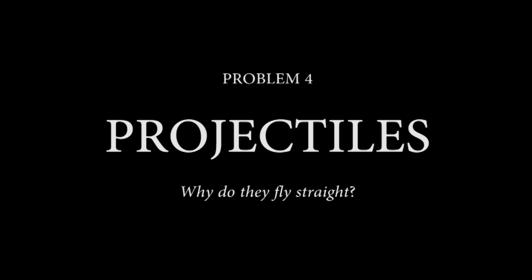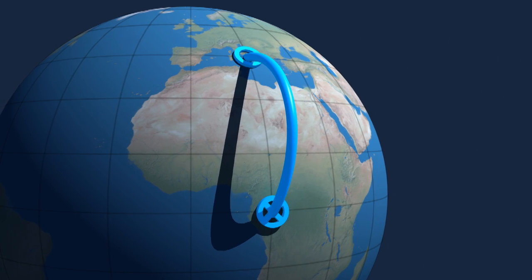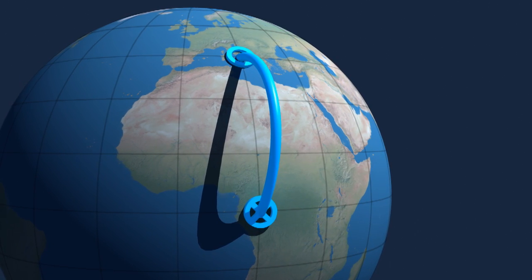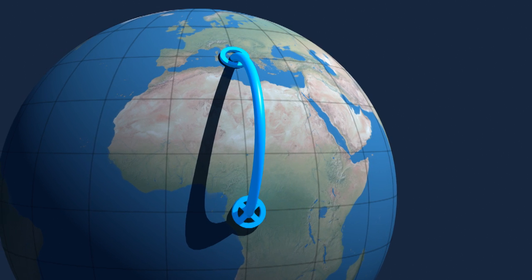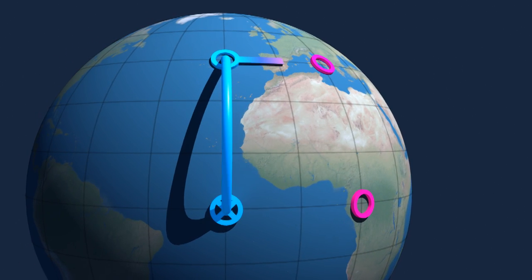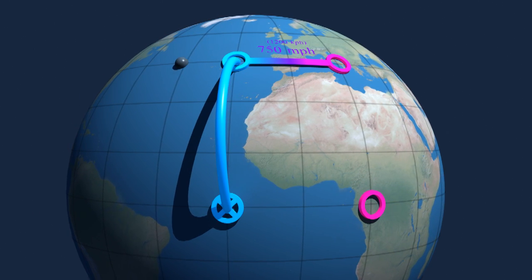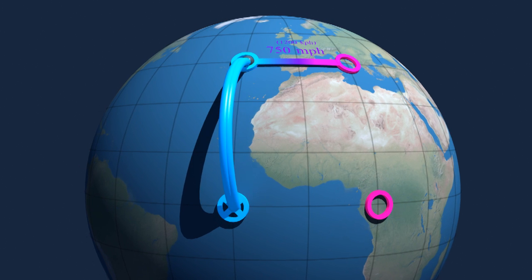Fourth, the problem of projectiles. If you fire a cannonball towards the south, it will land due south as you'd expect. But only if the Earth is not moving. Now, let's put the Earth in motion. Italy is rotating at 750 miles per hour. The cannonball was moving at the same speed when it was launched.